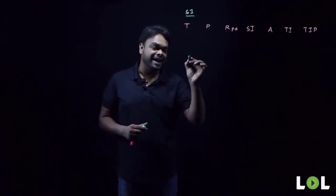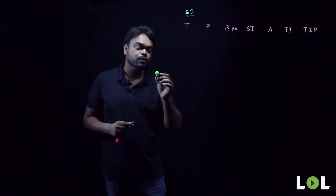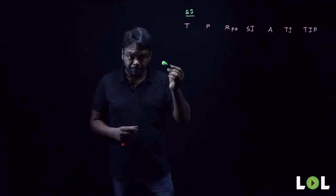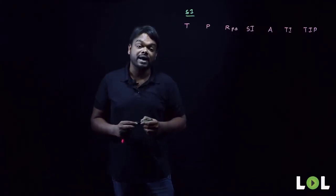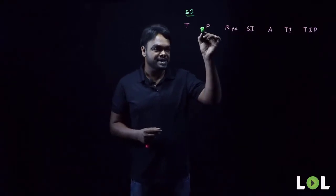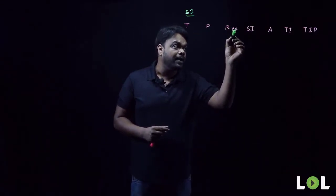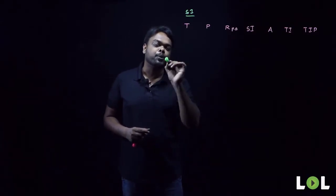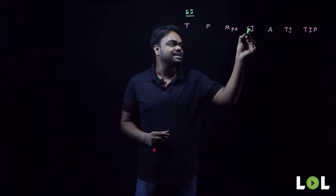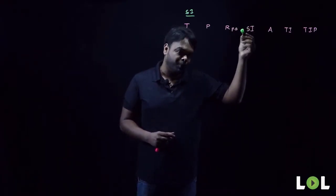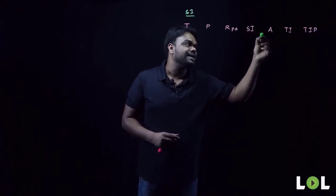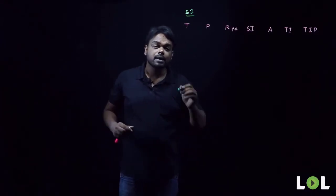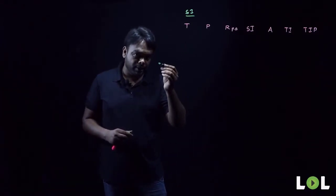Let us understand simple interest and its mechanism with an example. The terminology: T is the time period for which the borrower has taken money from the lender; P is the principal or the investment of the lender; R percent per annum is the rate of interest, which is the same as profit percent in profit and loss; SI is the simple interest or profit amount. TI and TIP will be explained in the next couple of minutes.